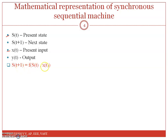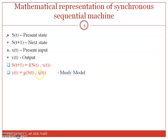s(t+1) is a function of s(t) and x(t). That means, next state is a function of present state and present input. The output y(t) will be a function g of s(t) and x(t), meaning output is a function of present state and present input — this corresponds to the Mealy model.